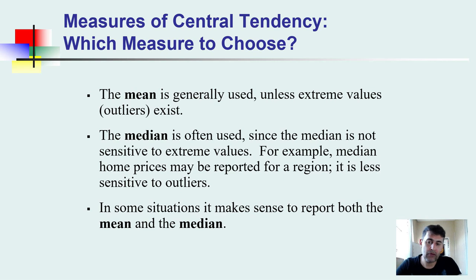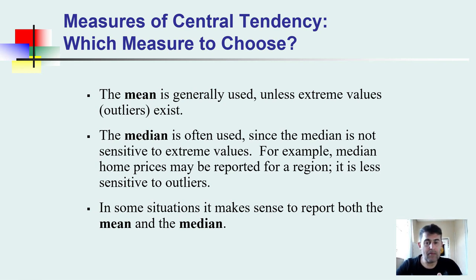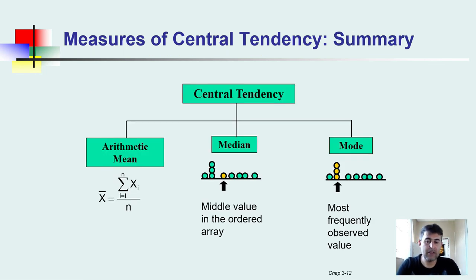Which measure should we choose? The mean is generally used unless extreme values or outliers exist. If outliers are present and we want the clearest representation, we should remove them before calculating the mean. The median is often used when we want a measure not sensitive to extreme values — we can keep the outliers in our data and still get a meaningful central value. For example, median home prices are commonly reported for regions because they are less sensitive to outliers. In some situations it makes sense to report both the mean and the median.